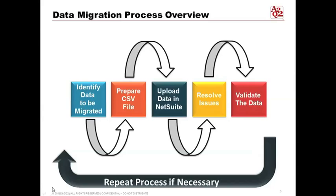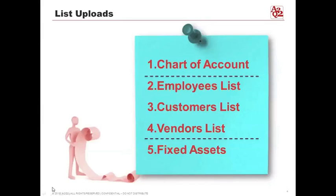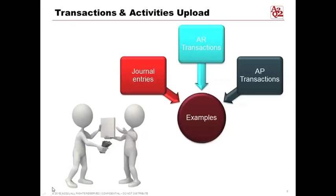Here are the five types of lists you'll upload. You first start with the chart of accounts, because that's the foundation of any ERP system. You then load the employees list, customers list, vendors list, and fixed assets. Now that you have the skeleton of your ERP system, you can give details to customers and vendors.